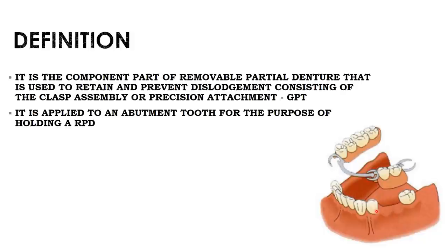Retention resists the force of gravity, the adhesiveness of food, and the forces associated with the opening of the jaw. When food material sticks onto your clasp, the direct retainer prevents dislodgement. So direct retainers help prevent dislodgement due to gravity, food adhesiveness, and forces associated with jaw opening.